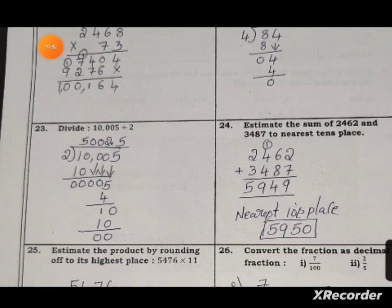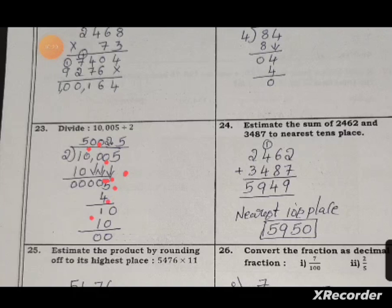Question twenty-three: divide 10,005 by 2. First, 10 divided by 2: 2 fives are 10, remainder 0. Write 0 in quotient. Bring down 5: 2 twos are 4, 5 minus 4 is 1. Add another 0 and divide again: 2 fives are 10. The quotient is 5,002.5 and the remainder is 0.